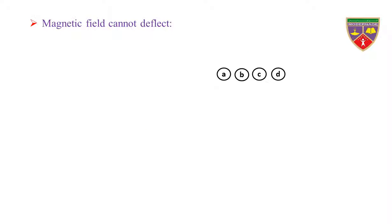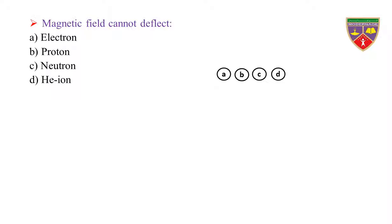Magnetic field cannot deflect. Option A: electron. Option B: proton. Option C: neutron. Option D: helium ion. The key is neutron. Therefore, the correct option is C.